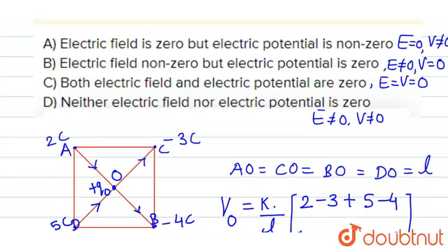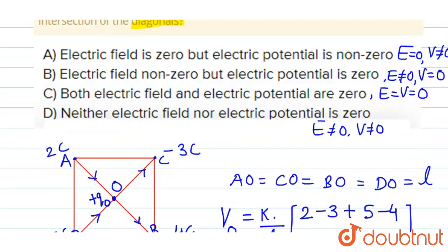Therefore, let's check the options. Option is electric field not equal to 0, but electric potential is equal to 0. So, correct option is option number B. Thank you.